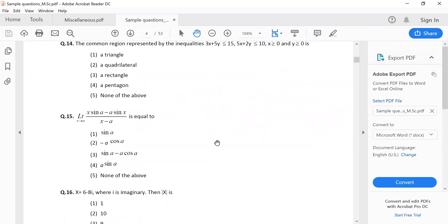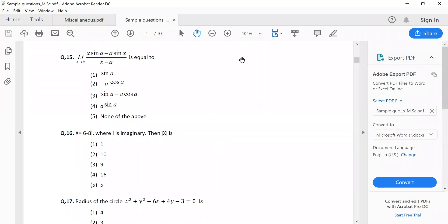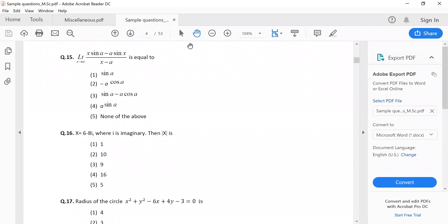For number 15, applying L'Hôpital's rule for x = a, the derivative is sin a minus a sin x minus a cos x divided by 1. So the answer is sin a minus a cos a.